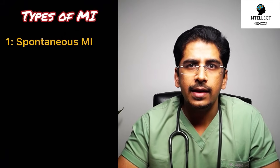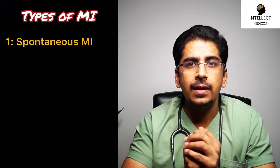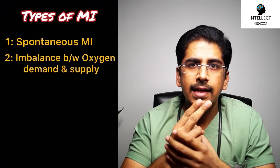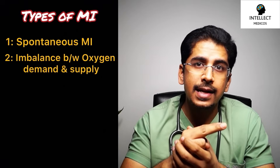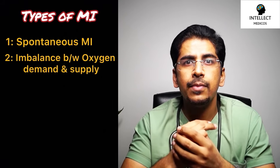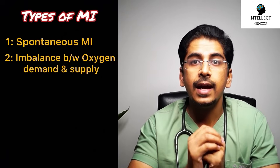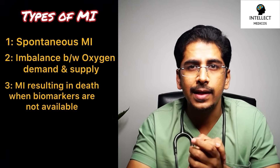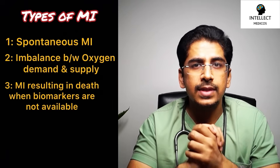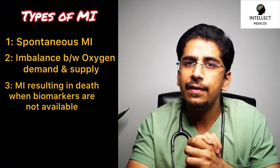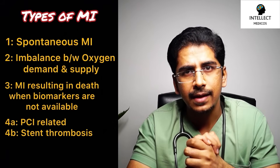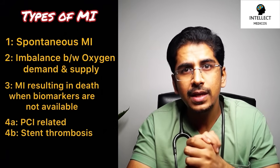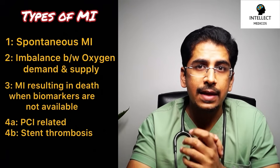Myocardial infarction has five types. Type 1 is spontaneous MI due to plaque rupture, fissuring, or erosion. Type 2 is due to imbalance between oxygen demand and supply, as in coronary embolus or coronary artery spasm. Type 3 is MI resulting in cardiac arrest when biomarkers are unavailable. Type 4 is divided into 4a (related to PCI) and 4b (related to stent thrombosis). Type 5 is related to CABG.